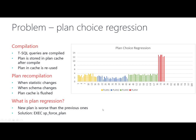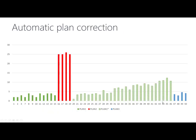One of the solutions for this is to execute the procedure SP_force_plan, which will force some previous plan instead of this red plan. In SQL Server 2017, we have a new feature called automatic plan correction. For every query, we will remember something called the last good plan — it is the last plan that had good performance when it was executed.